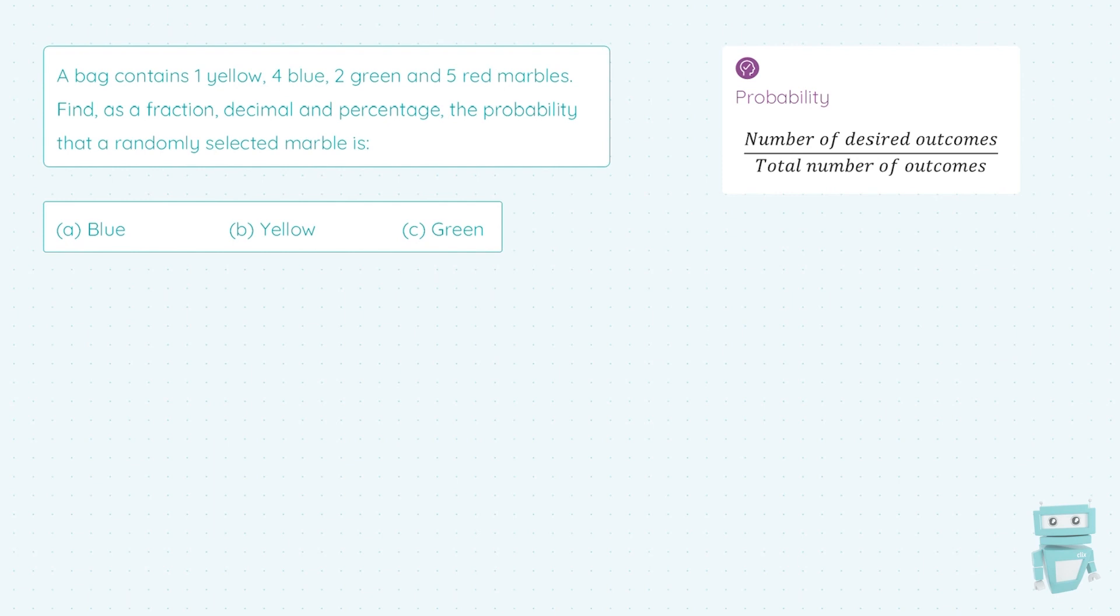Now, these numbers can either be decimals, fractions, or percentages, and typically a question will tell you which one they want, but if they don't, you can give any of those as your answer. And a reminder that probabilities lie between 0 and 1, or 0 and 100%.